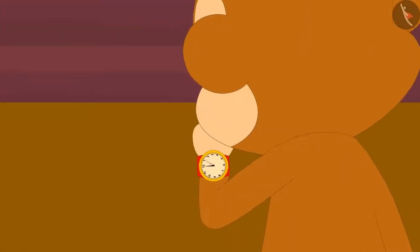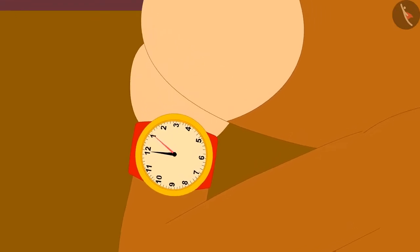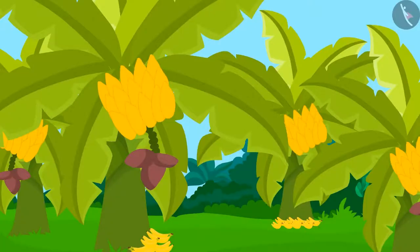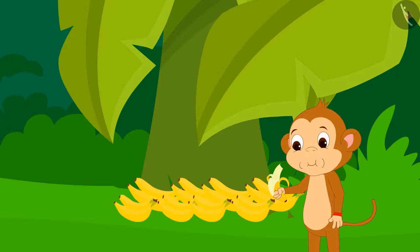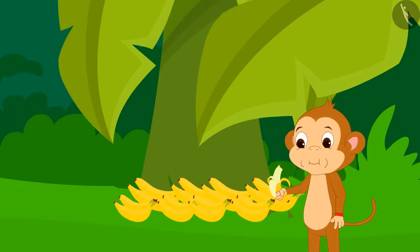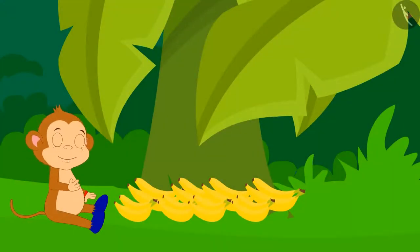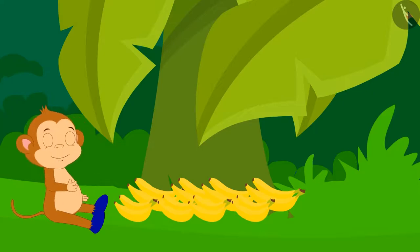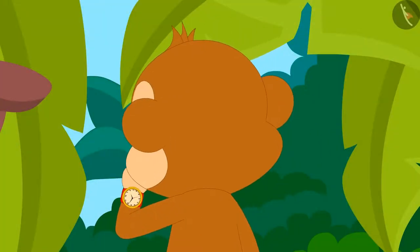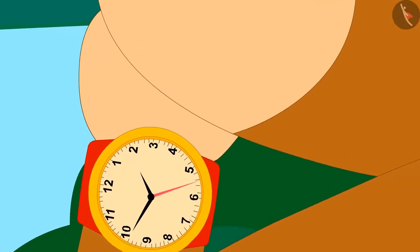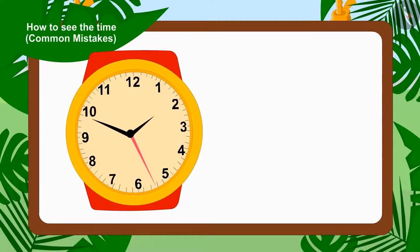It's finally 12 o'clock and Babban reached a world which was full of bananas. Babban became very excited and quickly started eating bananas. Babban was so happy that he did not care about time, and he kept eating bananas. Then, when Babban's stomach was full, he started feeling very sleepy. When Babban saw the time in the watch, the needles of the watch were like this.